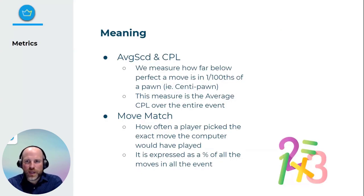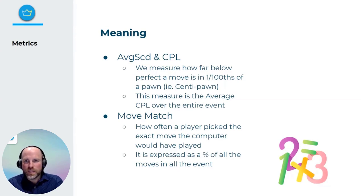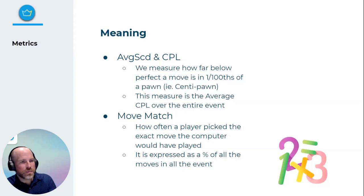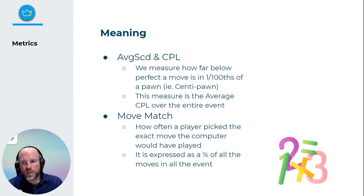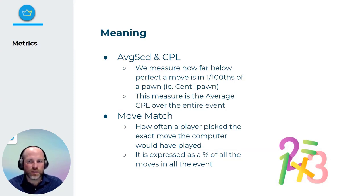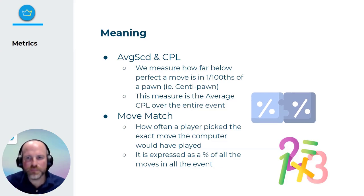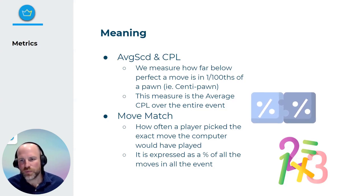Let's unpack the key metrics and terminology needed to really decipher a Fair Play report. There are two critical numbers: centipawn loss and move match percentage. A move match percentage is exactly like it sounds — how many moves did the player pick the move that Stockfish or another strong chess engine would have played? What percentage of moves across a game or event were exactly the same as the computer's best move?